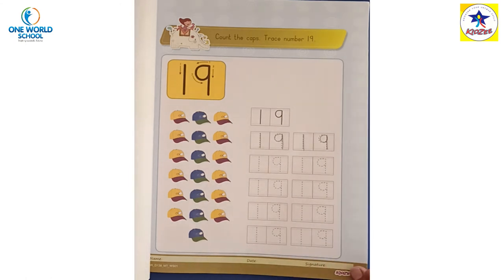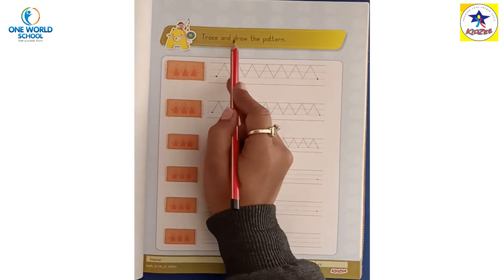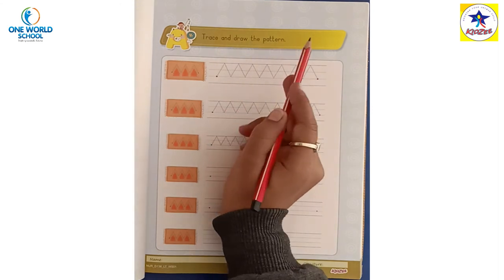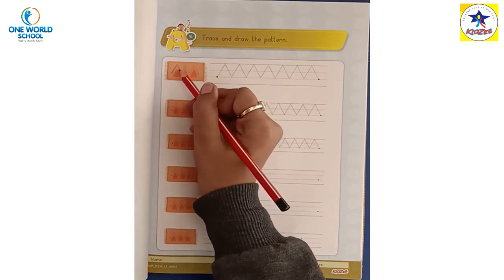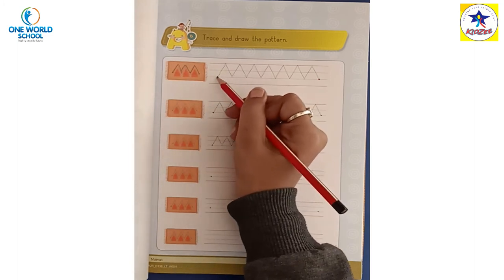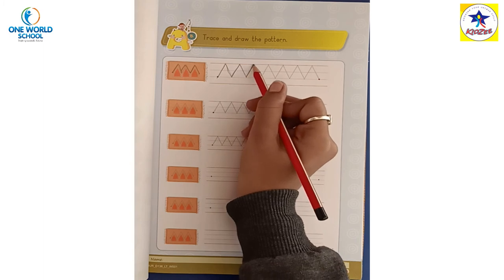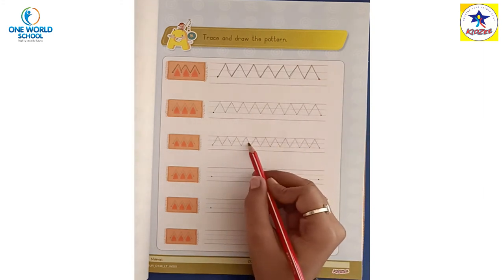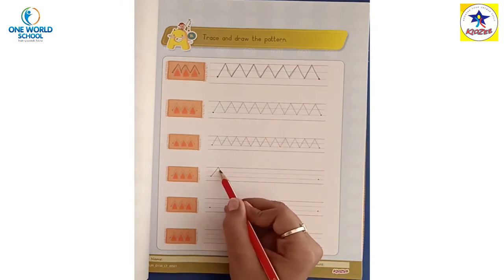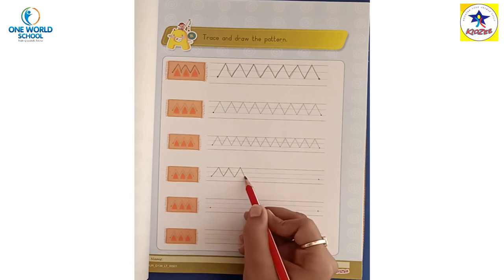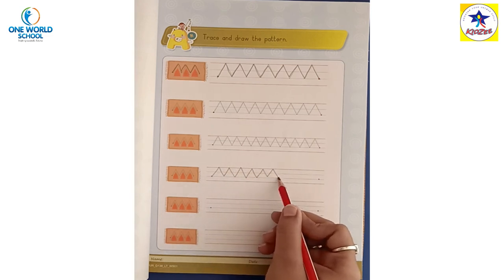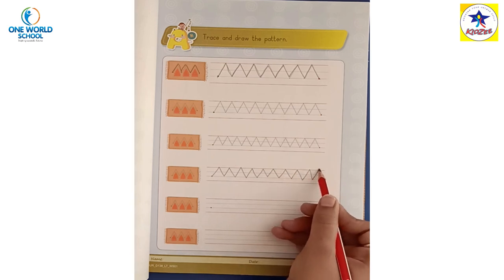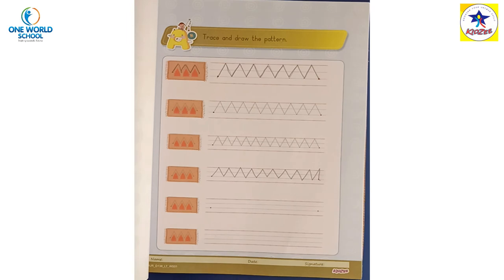Then we have to turn our page. Trace and draw the pattern. This pattern is the mountain pattern. This pattern is the same. These two lines are the same. There are only dots — we have green dots from red dots. Now it's time to say bye-bye. Bye kids.